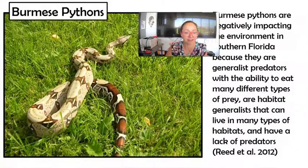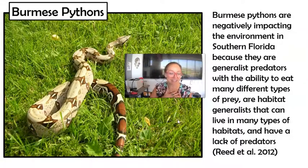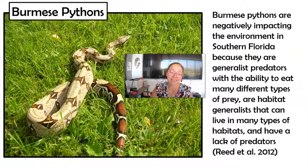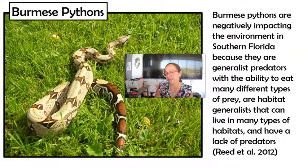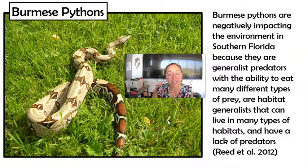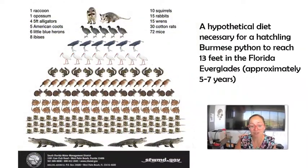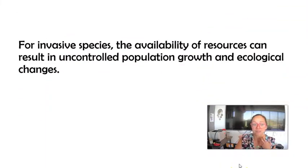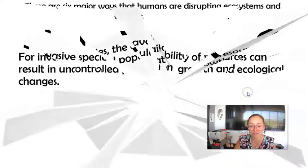The third example is the Burmese python. In Florida, some pet owners decided they no longer wanted their pythons and let them loose. They've grown unchecked in the Florida Everglades with no natural predators. They're generalists — they eat a wide variety of food and can handle a wide variety of habitats — which makes them the perfect kind of invasive species. This picture shows how much food a python consumes to reach five to seven years old. The availability of resources results in uncontrolled population growth and ecological changes.